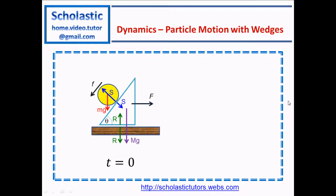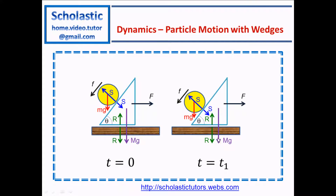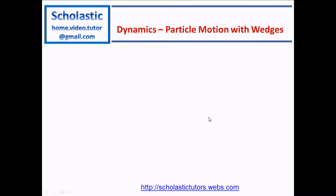What's going to happen is that the particle is initially at rest and slides down the inclined plane. Due to the force S exerted on the wedge, the wedge is pushed forward. After time t equals zero, the wedge moves forward with acceleration capital F while the particle moves downward with acceleration simple F.